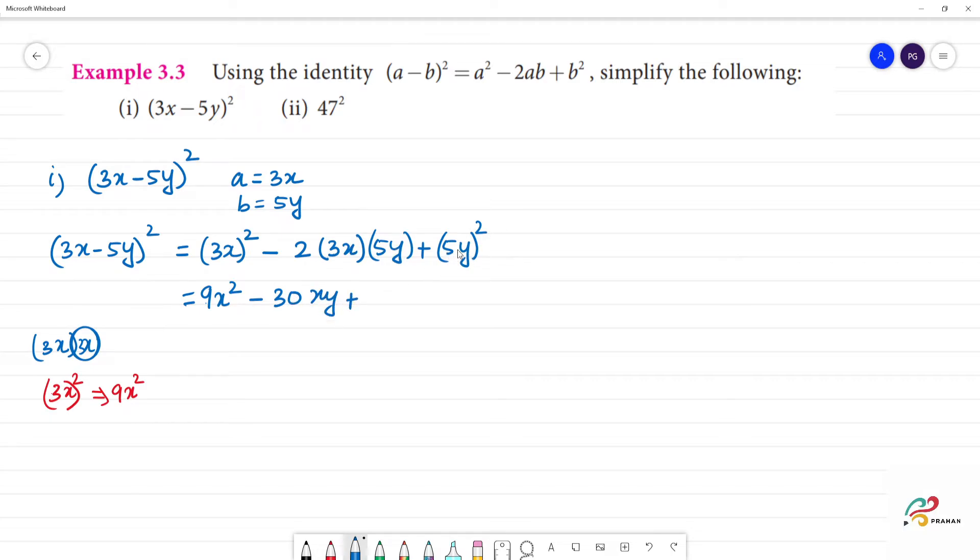Plus, 5² is 5 times 5, which is 25. 25y². The answer is 9x² - 30xy + 25y².